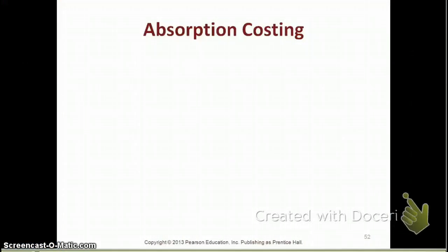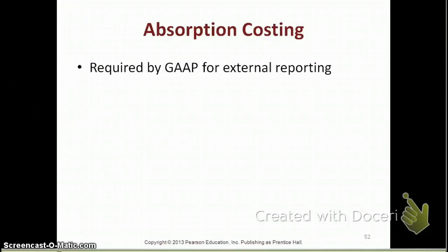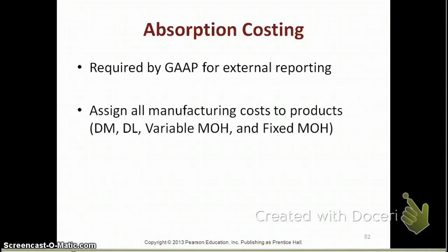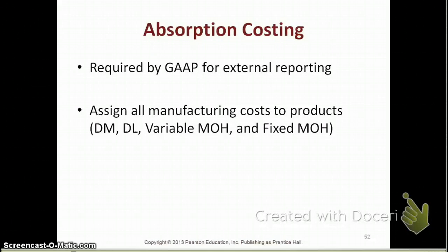Absorption costing is the type of accounting required by GAAP for external reporting. It is where we assign all our manufacturing costs to products — direct material, direct labor, and both variable and fixed manufacturing overhead costs are all assigned to products. We did that in job costing and process costing. GAAP tells us we have to assign all these costs to calculate the cost of our inventory; they become inventorable product costs.